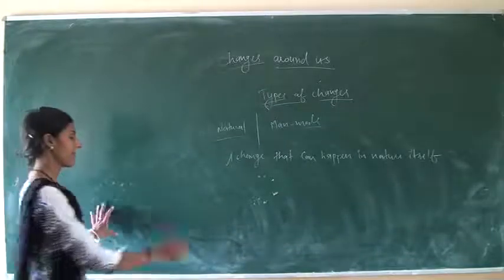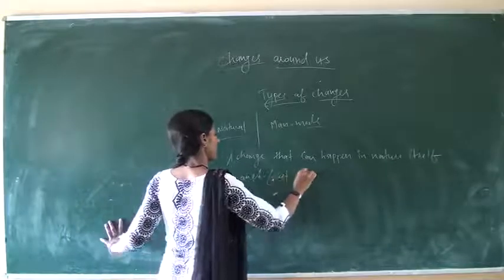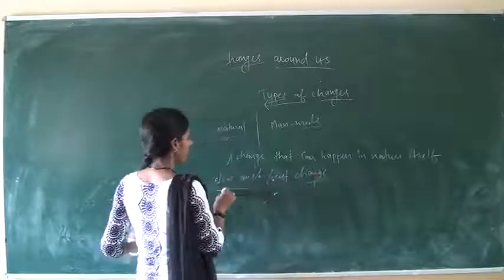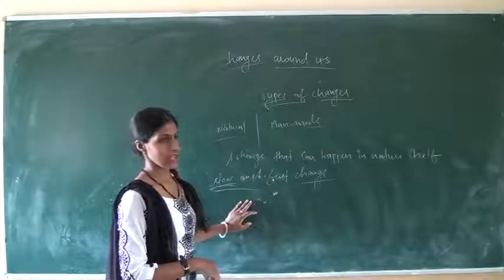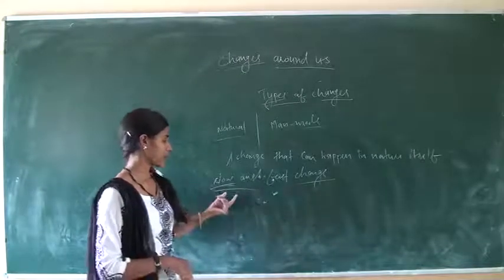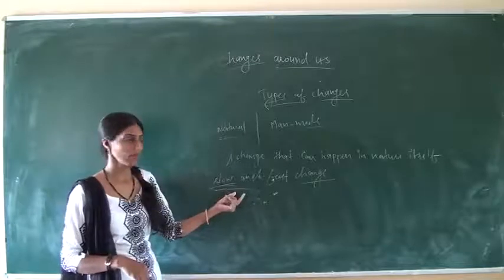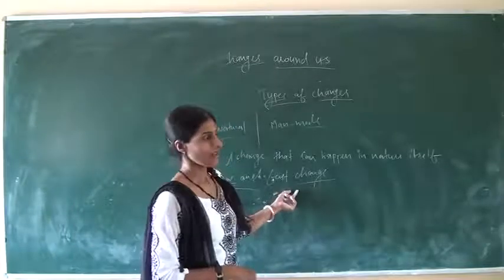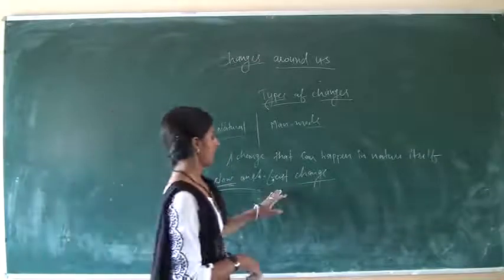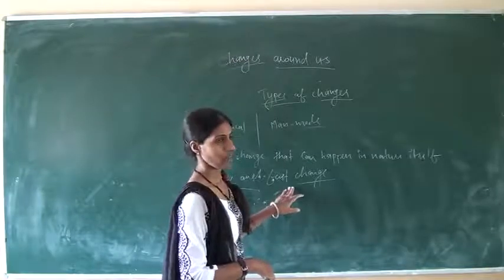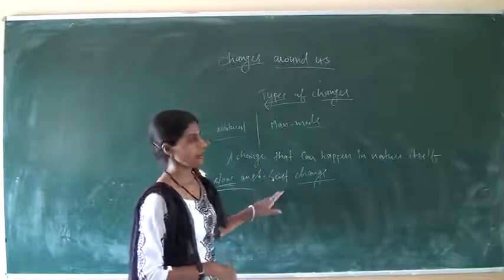Next are slow and fast changes. Slow changes are those which take a very long time to occur — for example, rusting of iron takes place very slowly. Fast changes are those which occur very quickly — for example, occurrence of an earthquake, which occurs within one or two seconds or minutes.